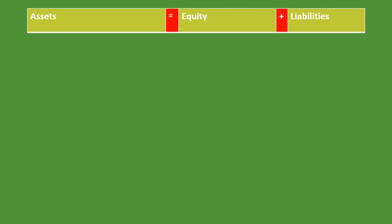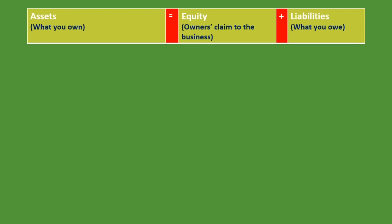We know that the accounting equation is: assets equals equity plus liabilities. That is exactly how the balance sheet works — our total assets have to equal our total equity and liabilities. Remember, assets is what you own, equity is the owner's claim to the business, and liabilities is what you owe.